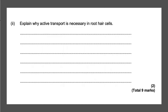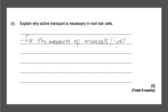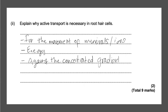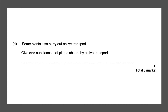Next question: explain why active transport is necessary in root hair cells. It is two points — you need two points to get the two marks. Active transport is necessary in root hair cells for the movement of minerals or ions. You have to explain how this happens: it needs energy, and it happens against the concentration gradient. You can also mention active transport itself, but all you need to say is those two points and that will give you two marks.